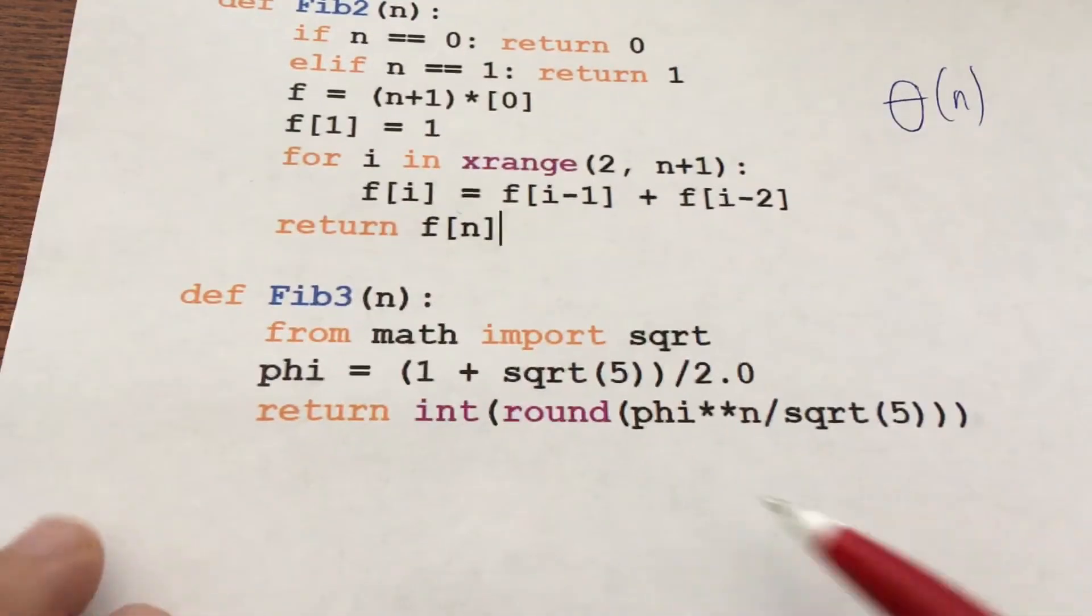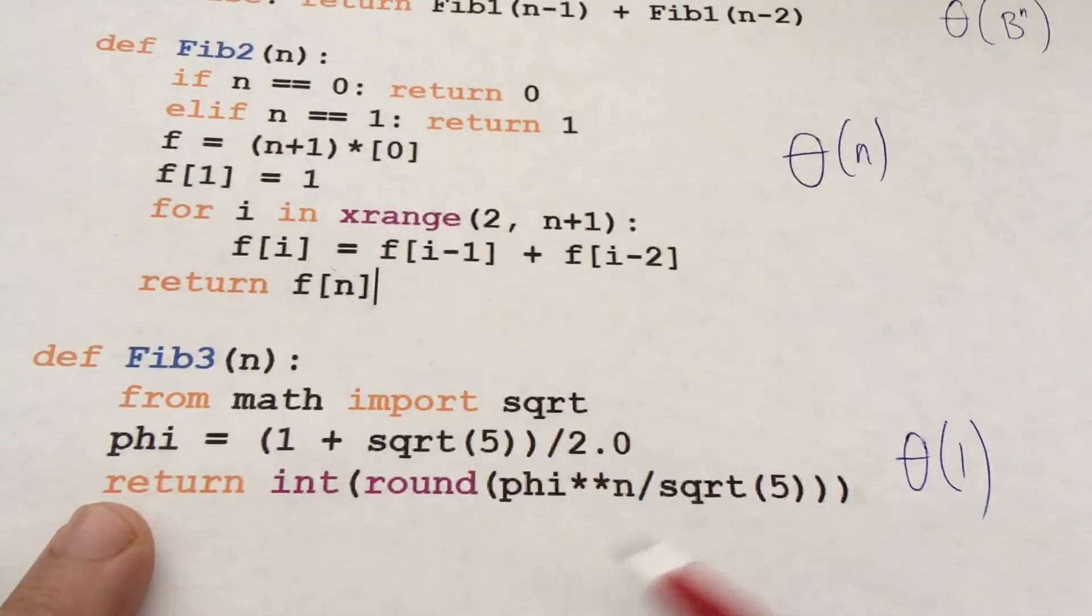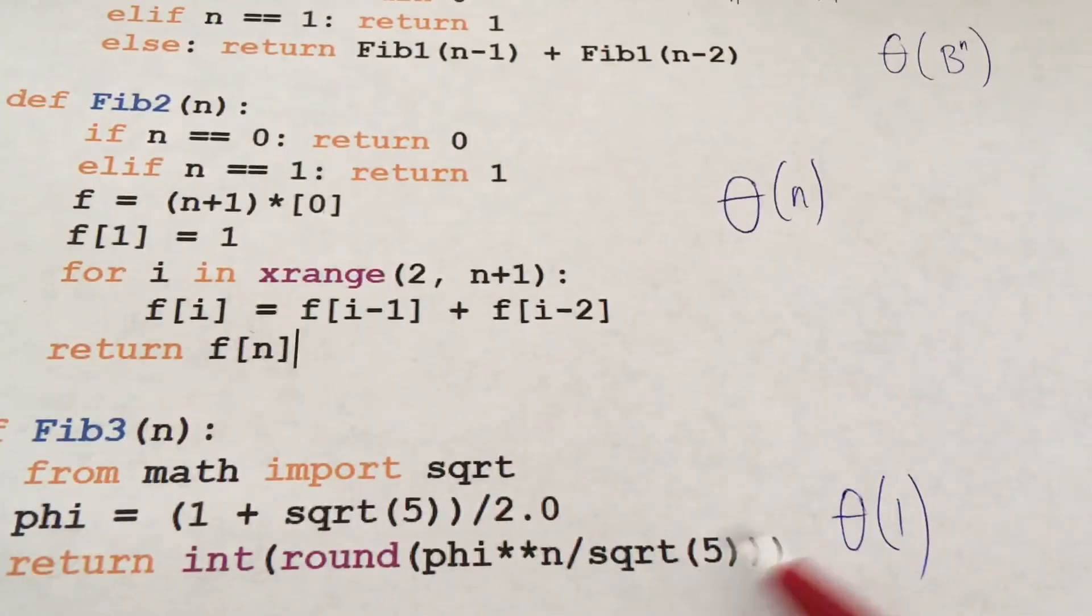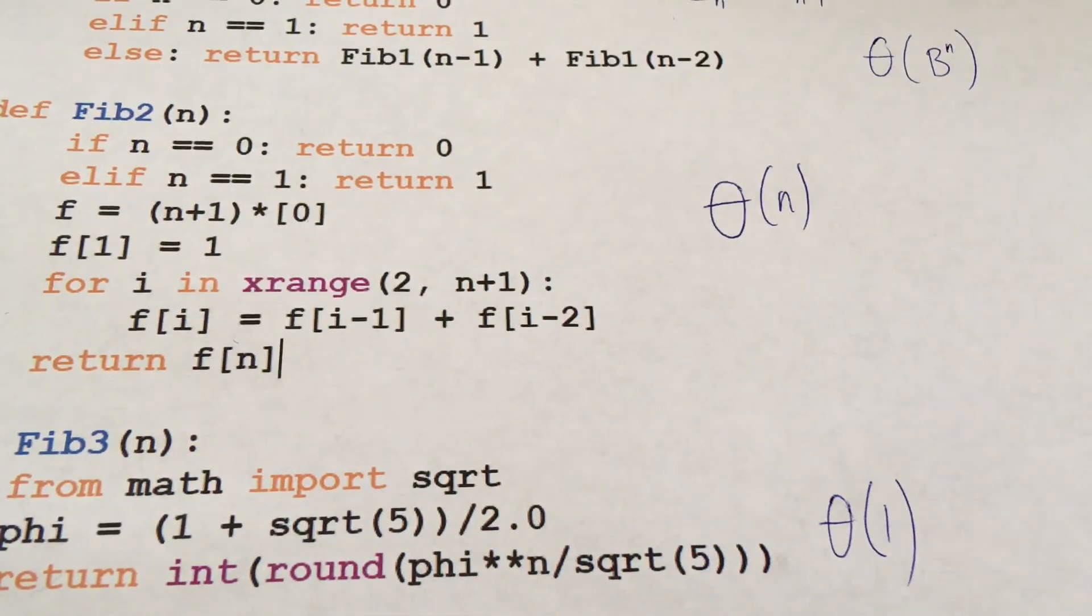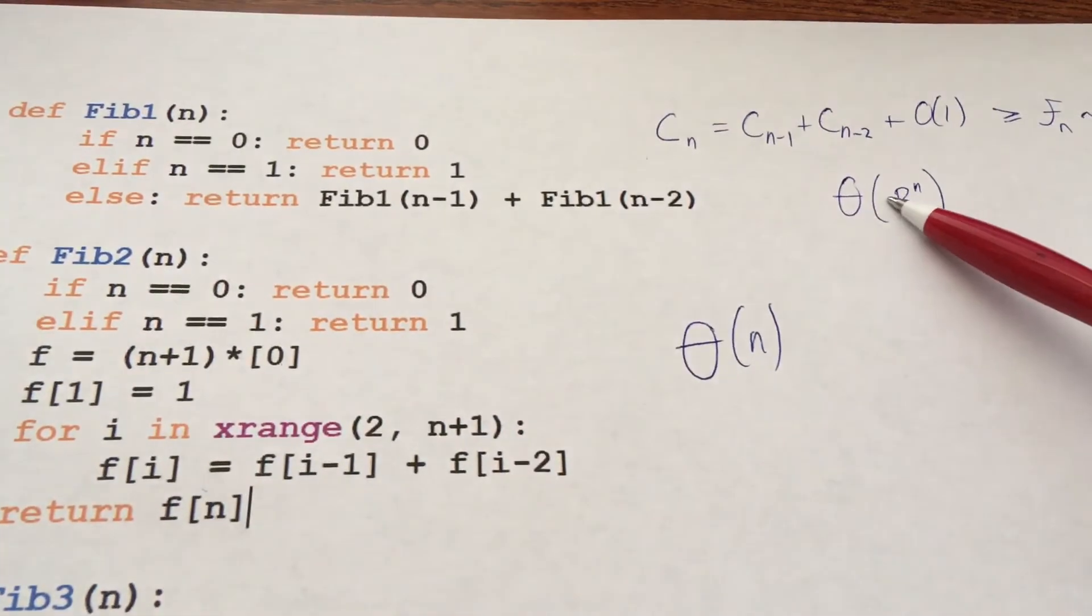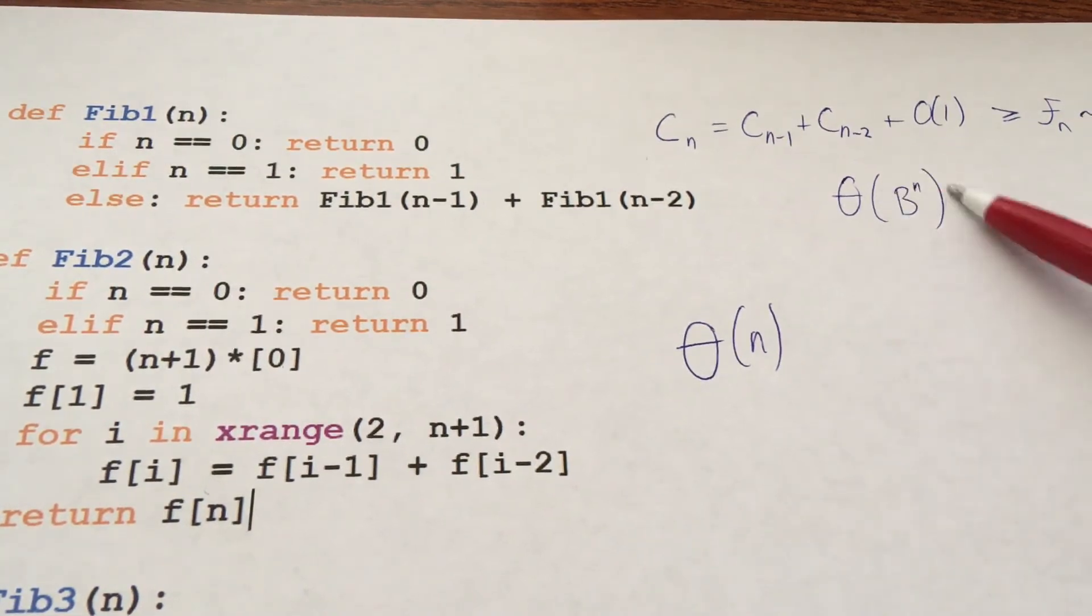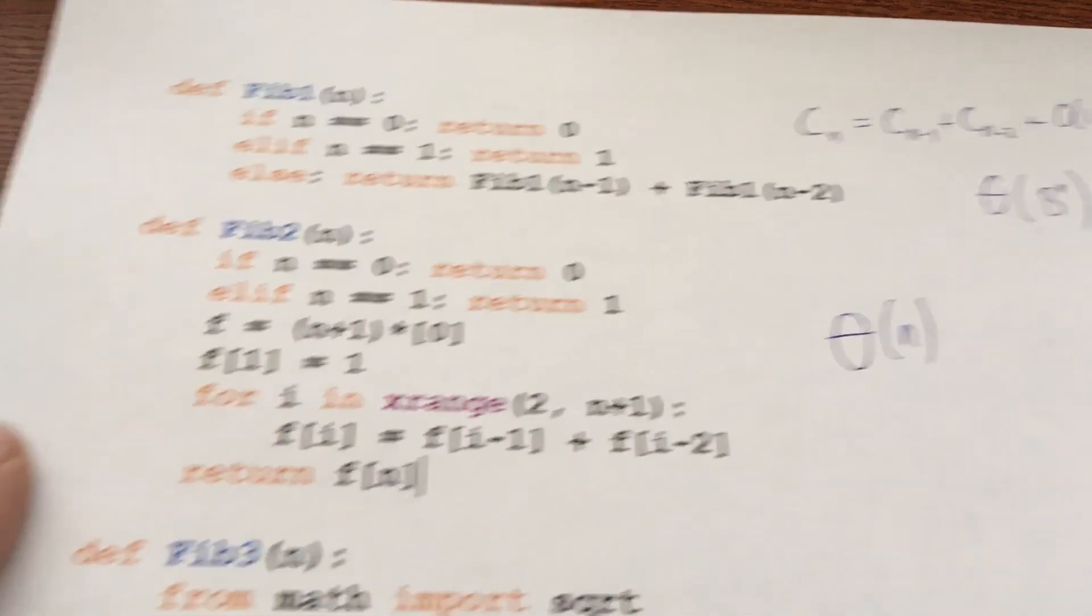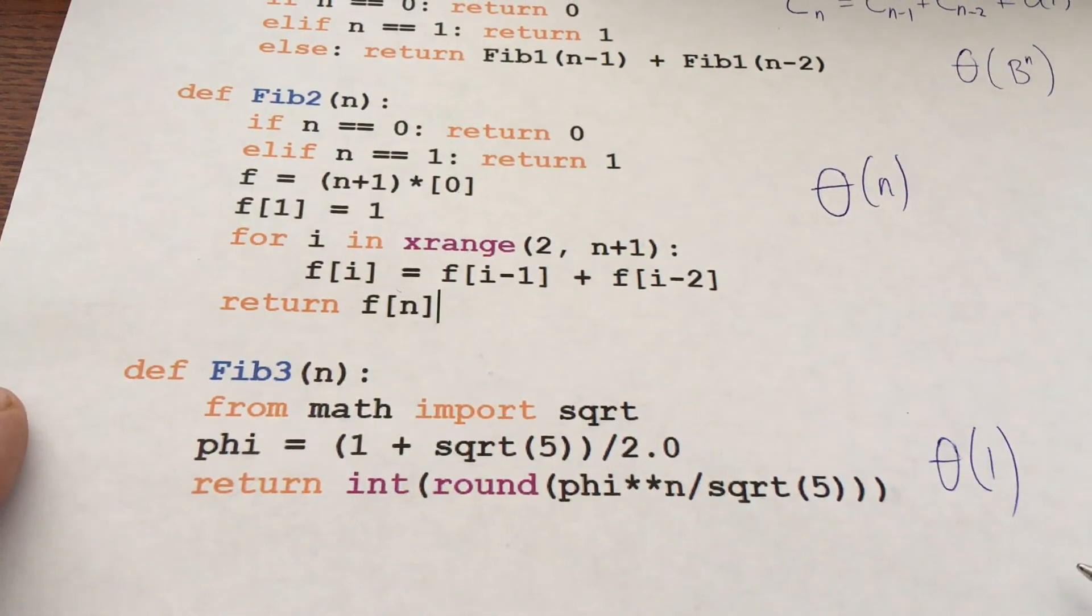And now fib3, all we're doing is just some arithmetic. So this one has computational cost of one, just some constant number of arithmetic. So it doesn't get more and more expensive as we ask for larger and larger terms. So we have three completely different implementations. The first implementation is exponential cost in terms of the nth Fibonacci number. This one is linear in terms of the nth Fibonacci number, and this one's constant. So three completely different computational costs.